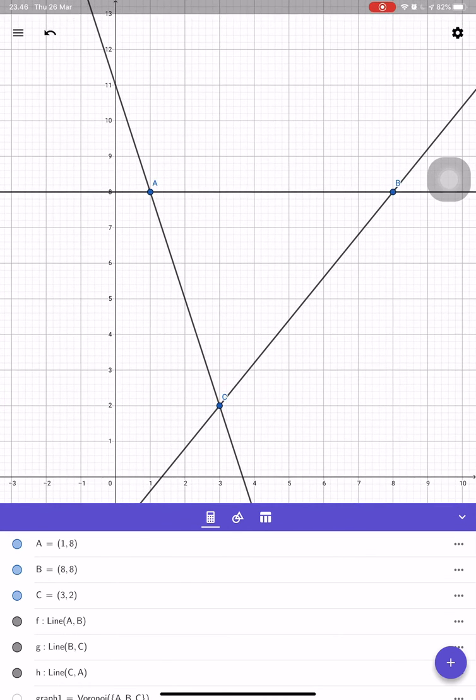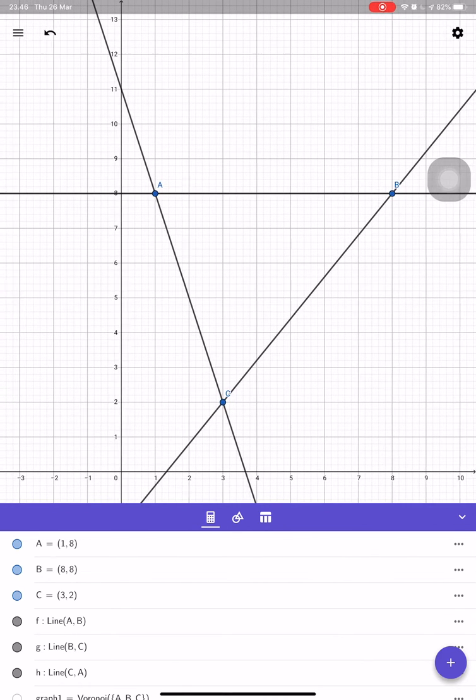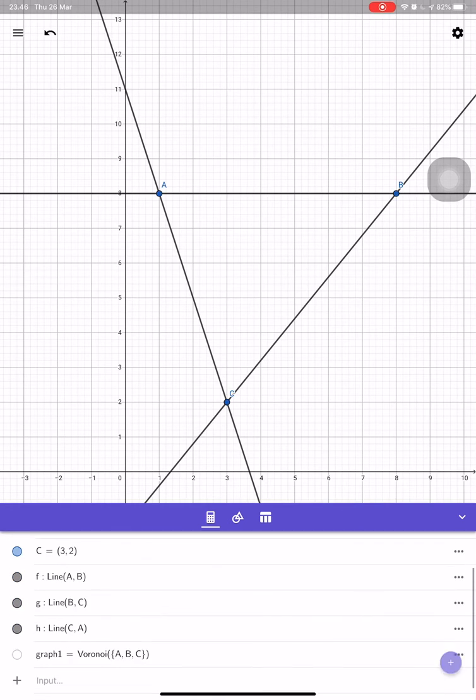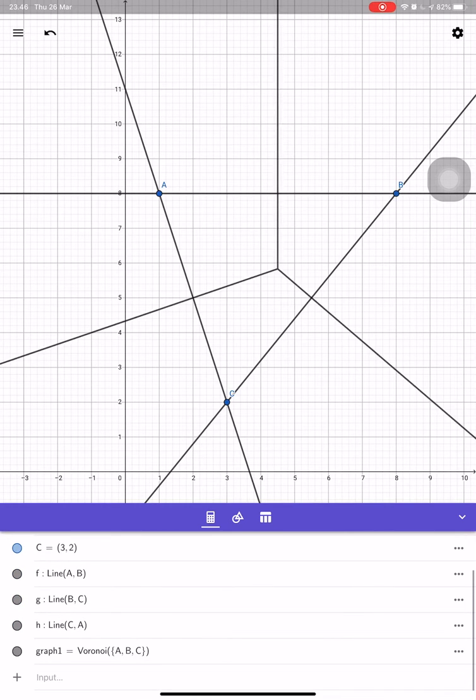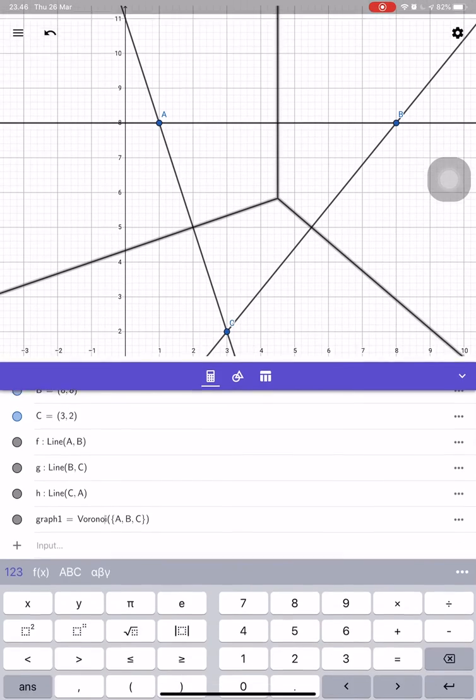This is by GeoGebra. All you need to do is plot all the points and then type Voronoi with this curly bracket.